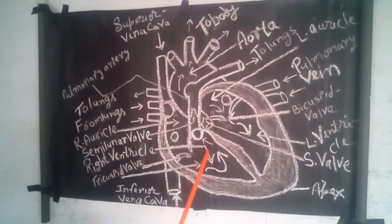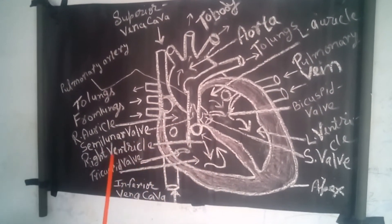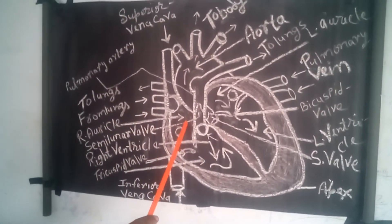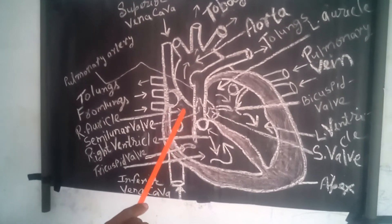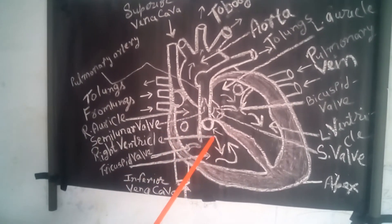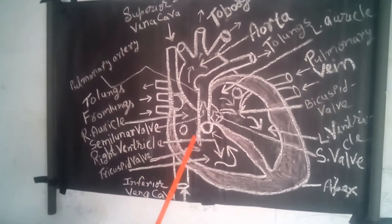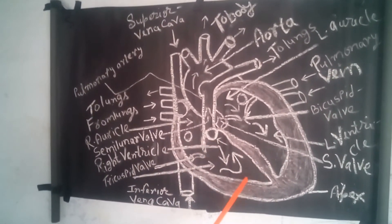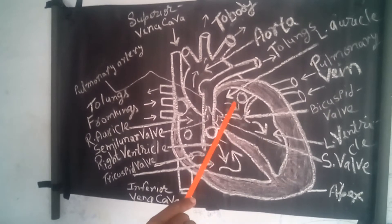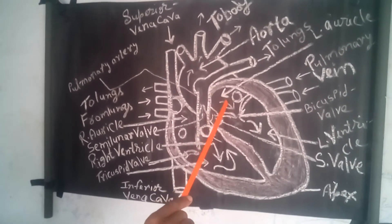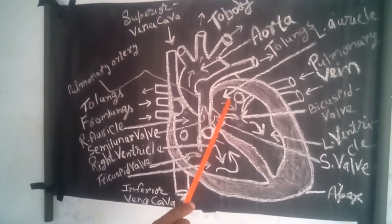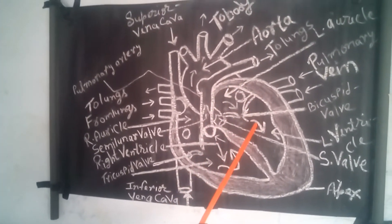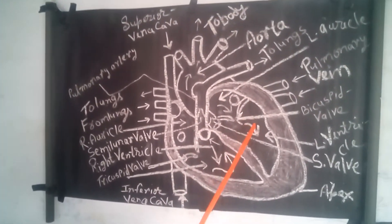This is the right side of the heart — this is called the right auricle. And this is the left auricle.